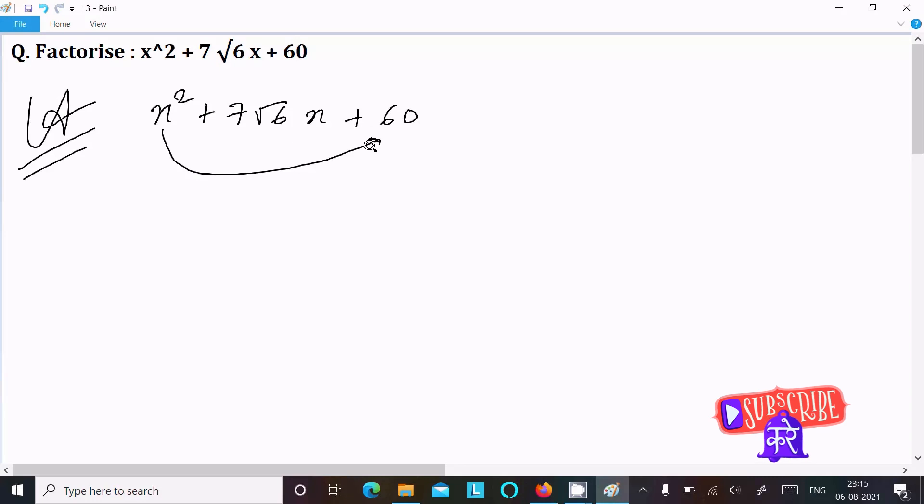First we need to multiply the first term with the last term. So here x² into 60, that comes 60x². After that, write the middle term 7√6x.